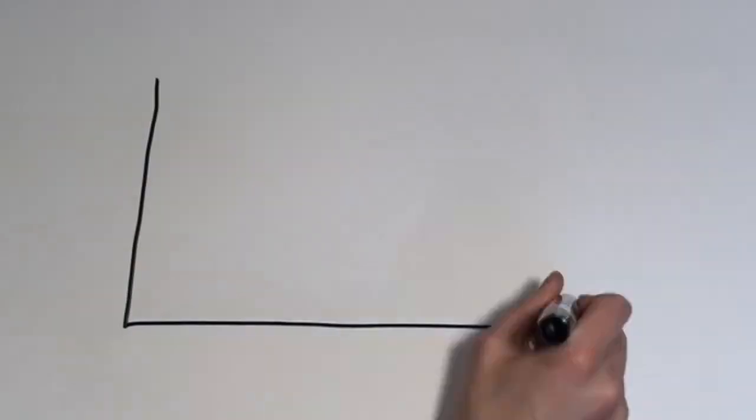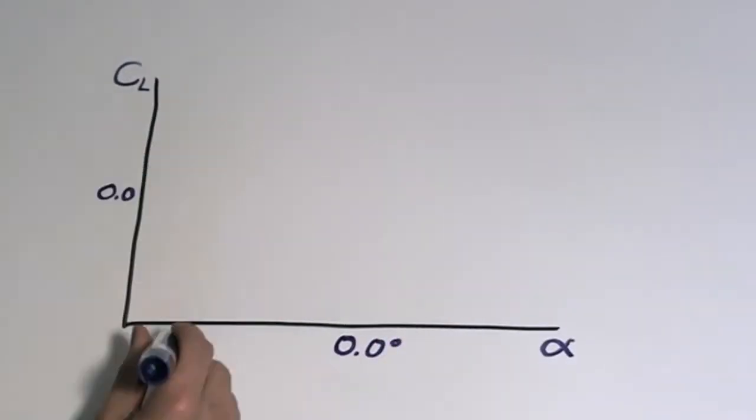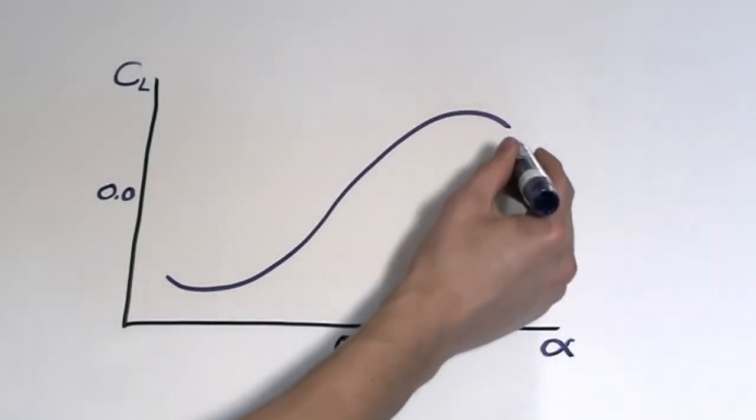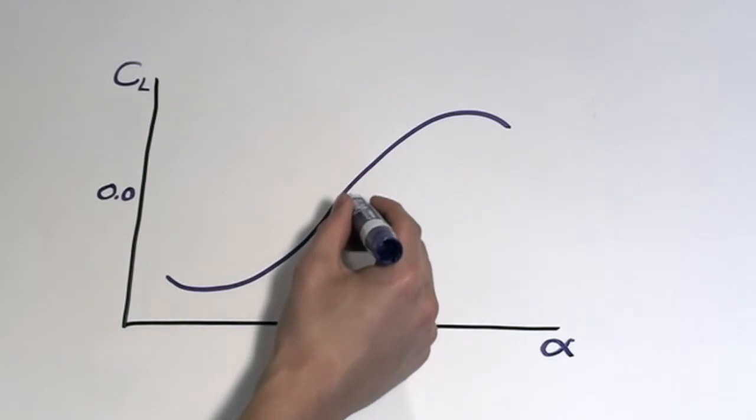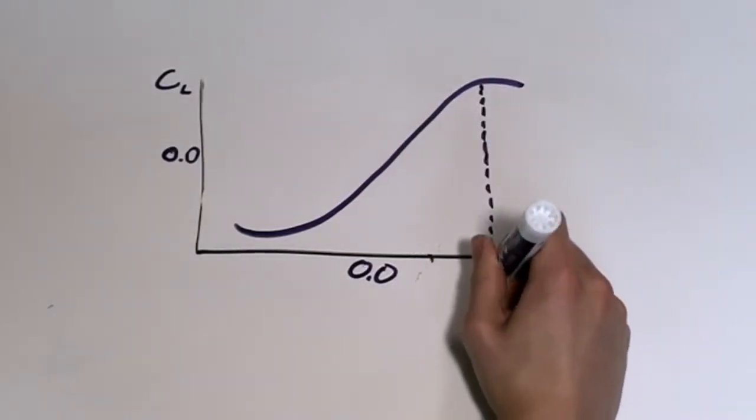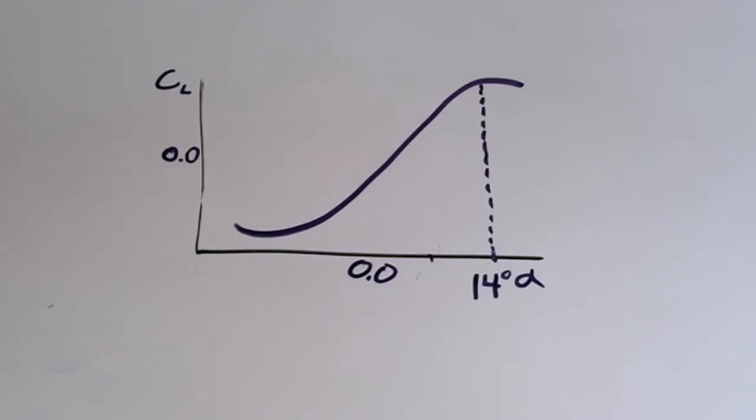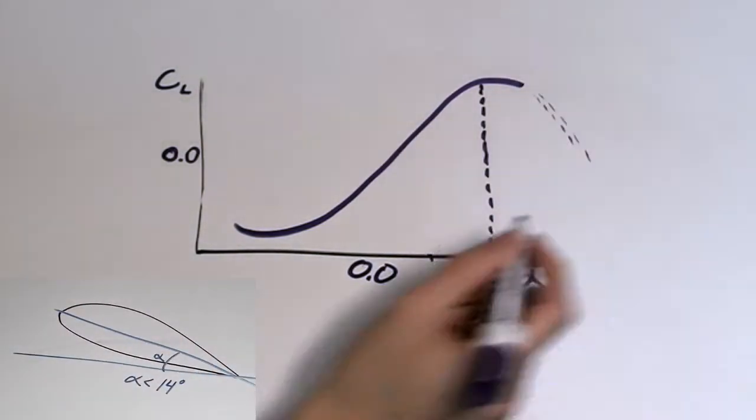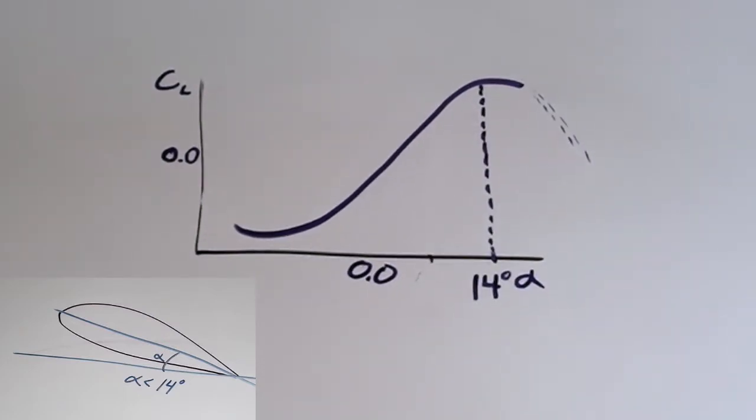As the angle of attack increases, the coefficient of lift increases linearly up to the point where stall begins to occur. Note that this means that negative angles of attack result in negative lift coefficients. This is consistent with the predictions we made, although we begin to see decreasing slope at about 14 degrees, which is earlier than the typical predicted angle of 15 degrees.